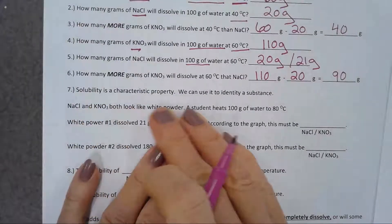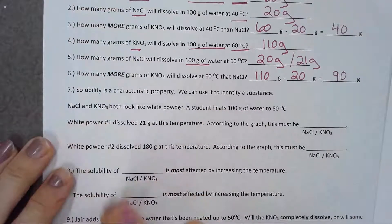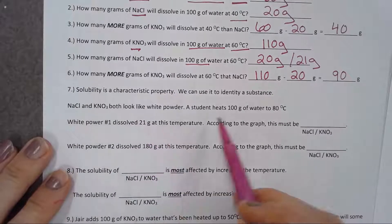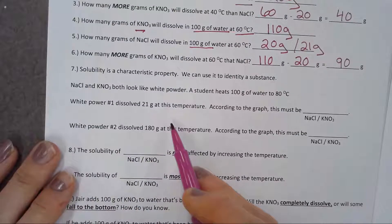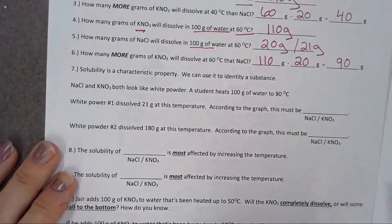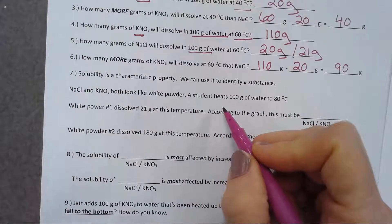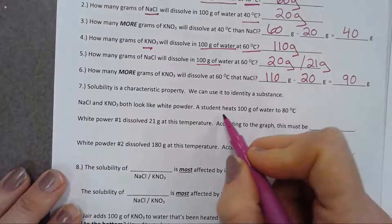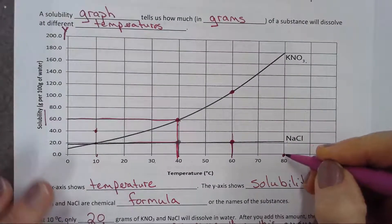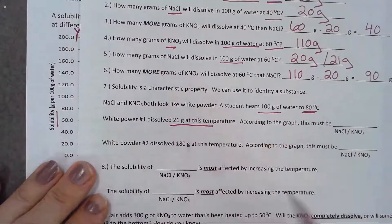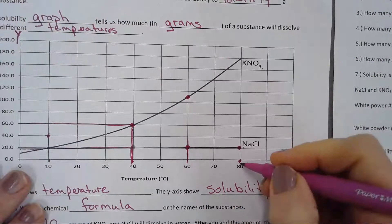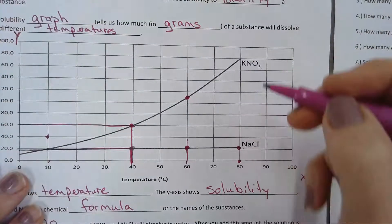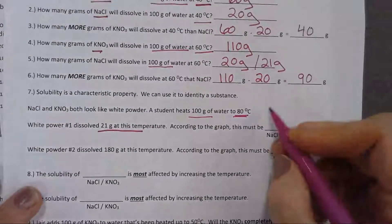Solubility is a characteristic property — we can use it to identify a substance. NaCl and KNO3 both look like white powder. A student heats 100 grams of water to 80 degrees Celsius. White powder number one dissolved 21 grams at this temperature. Looking at the graph at 80 degrees, if only 21 grams dissolved, that must mean it's NaCl. Because if it had been KNO3, about 180 grams would have dissolved.